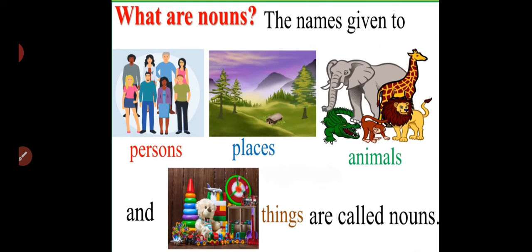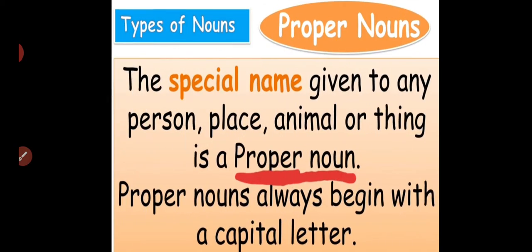What are nouns? The names given to persons, places, animals and things are called nouns. Now let us look into the types of nouns. We are going to discuss only proper nouns and common nouns. There are various types of nouns.